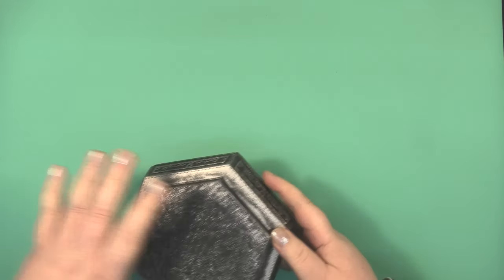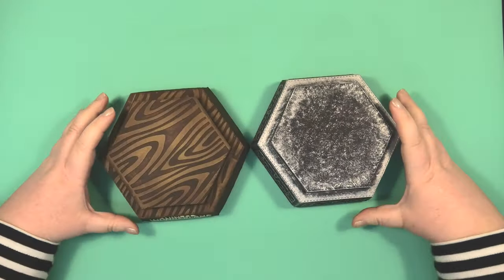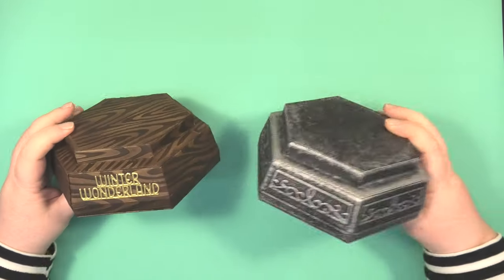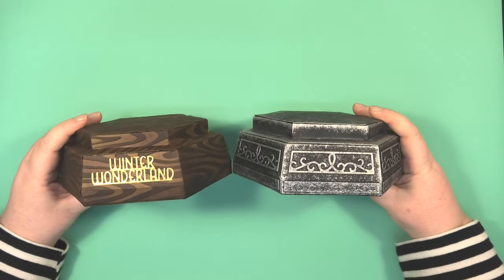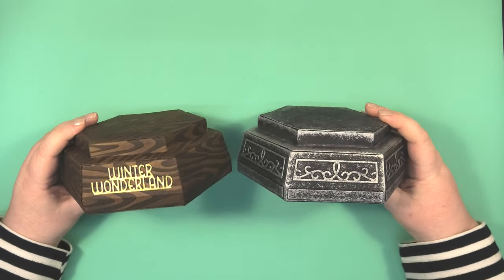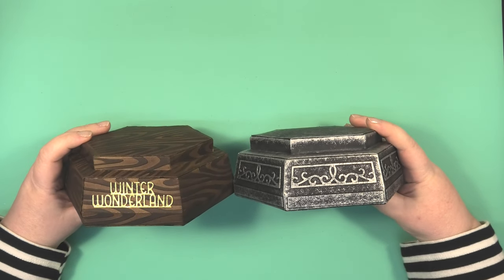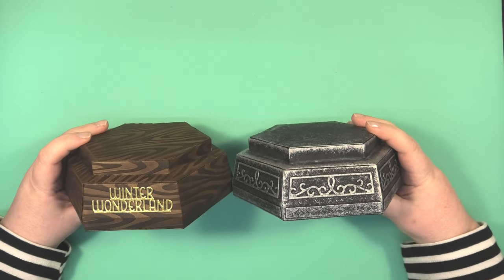Hello, now we're going to be putting the plinths together. Here's a couple that I've already made. I've done one in a pewter effect and the other one in a wood effect. These are your bases for two of the projects, for your lantern and for your snow globe, and it comes separately.